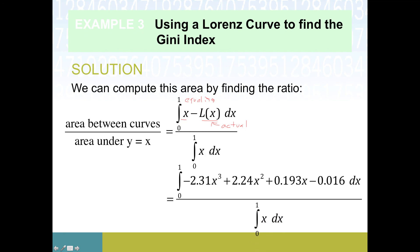So plugging in our actual values here, I did skip one step x minus and then our L of x has that formula that we were given all the way back at the beginning. And that looks like 2.3 x cubed minus 2.24 x squared, etc, all the way through. So then we're going to compute integral from 0 to 1 of x on the bottom.